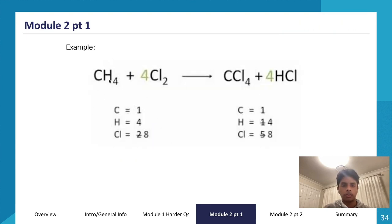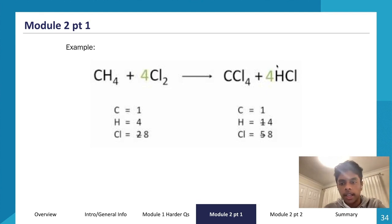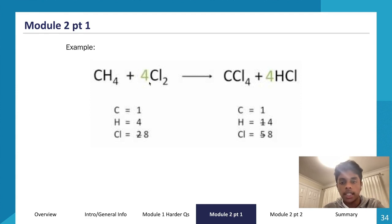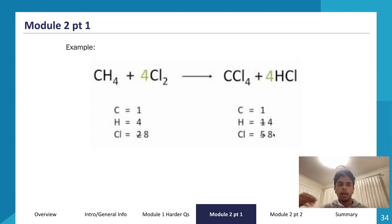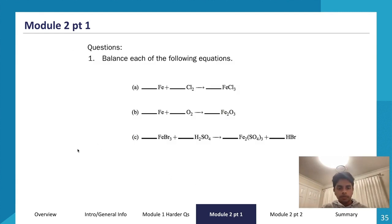Let's look at an example: CH4 + Cl2 → CCl4 + HCl. I'll put a 4 in front of Cl2 and a 4 in front of HCl. Checking: 1 carbon on each side — balanced. 4 hydrogens on the left, 4 hydrogens on the right — balanced. With 4 in front of Cl2 I have 8 chlorines on the left, and 4 + 4 = 8 chlorines on the right — balanced. So the balanced equation is: CH4 + 4Cl2 → CCl4 + 4HCl.